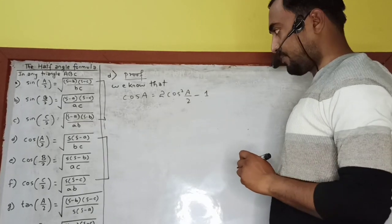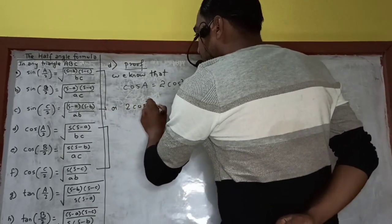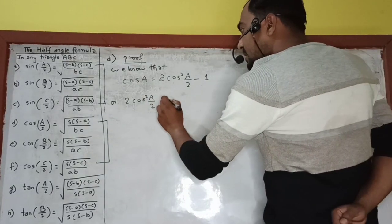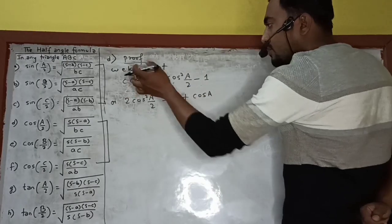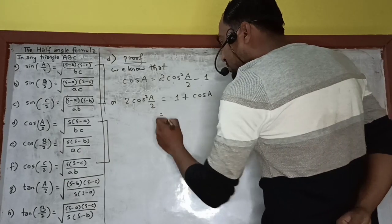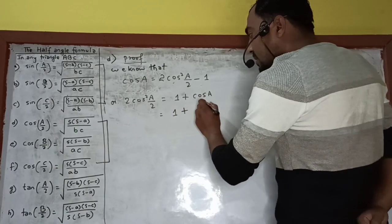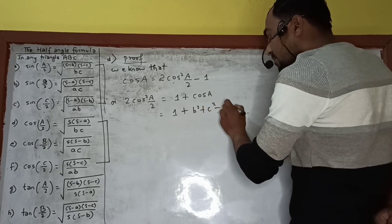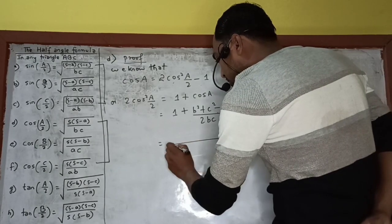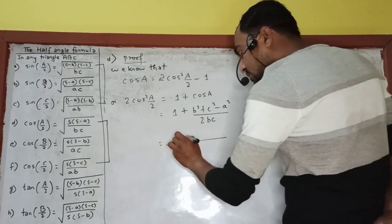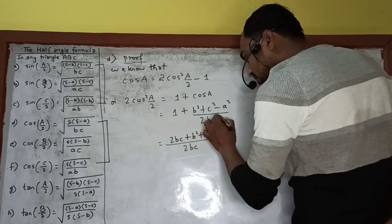So 2 cos²(A/2) = 1 + cos A. Substituting cos A from the cosine law: 1 + (B² + C² − A²) / (2BC). Taking LCM as 2BC, this becomes (2BC + B² + C² − A²) / (2BC).